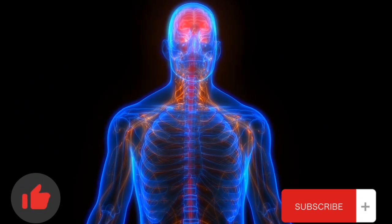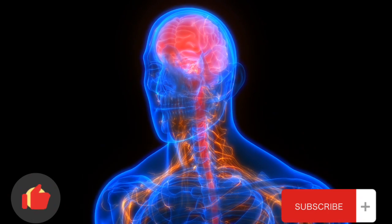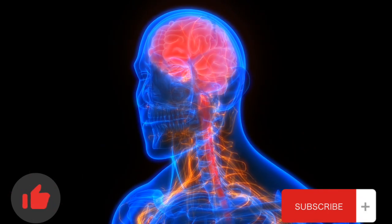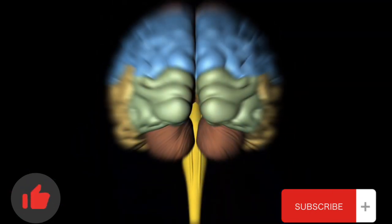Comprising different regions with specialized functions, the brain is responsible for cognition, emotions, and overall body functions. The brain consists of various parts, each with specific functions.